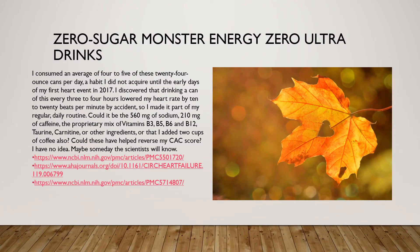I consumed an average of 4 or 5 of these 24-ounce Zero Sugar Monster Energy Zero Ultra cans per day — a habit I acquired during my first heart event in 2020. I discovered by accident that drinking a can every 3 or 4 hours lowered my heart rate by 10 to 20 beats per minute, so I made it a daily routine. Could it be the 560 mg of sodium, 210 mg of caffeine, the proprietary B-vitamin mix, taurine, carnitine, or other ingredients — plus 2 cups of coffee daily? Could these have helped reverse my CAC score? I have no idea.